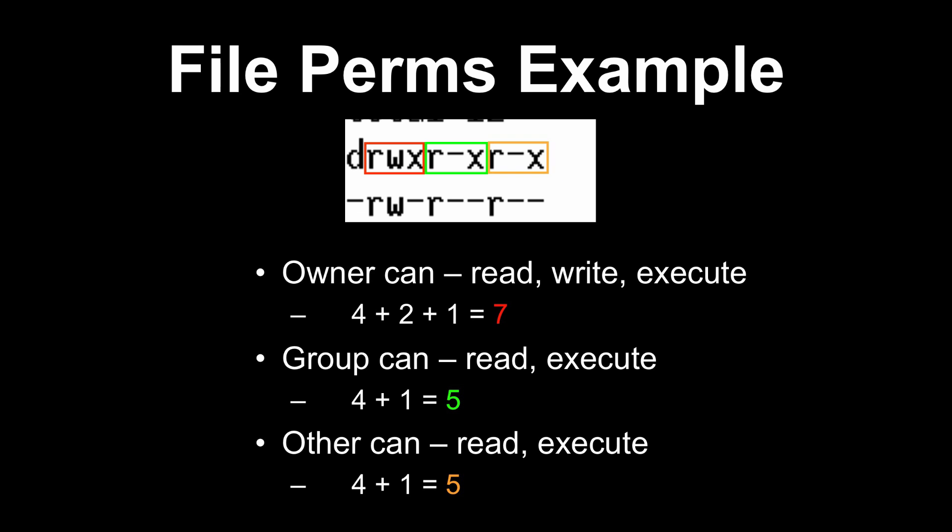Note that 4 plus 2 is 6, which is the way of saying a file can be read and written but not executed. Also, if a file has a permission of 0, it means that the owner, group, or all other users in the system have no permissions towards that file.